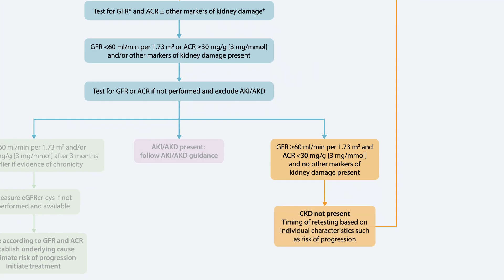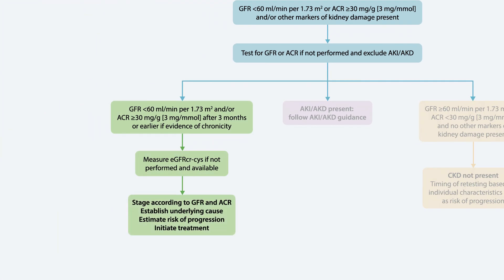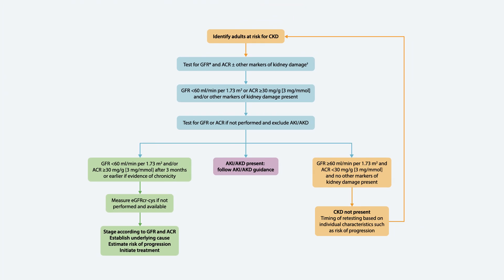By establishing chronicity, you may find that the person you're evaluating doesn't yet present with chronic kidney disease but remains at risk — and you'll need to assess the timing of retesting in the future — or you'll find the person meets the criteria for CKD, and then you'll need to more accurately evaluate GFR, stage the severity, establish the underlying cause, estimate the risk of progression, and initiate treatment.